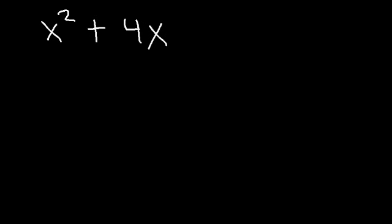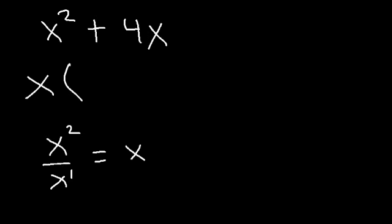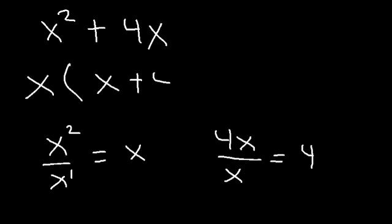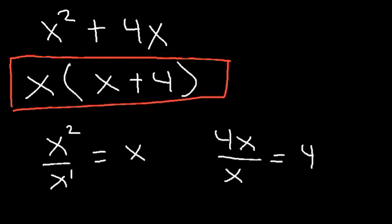The greatest common factor between x squared and 4x is x, because we can divide both terms by x. So if we take out an x: x squared divided by x is simply x, and 4x divided by x is 4. So the answer is simply x times (x plus 4). That's how we factor the first expression.